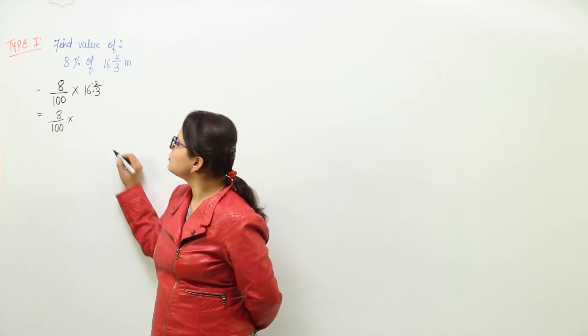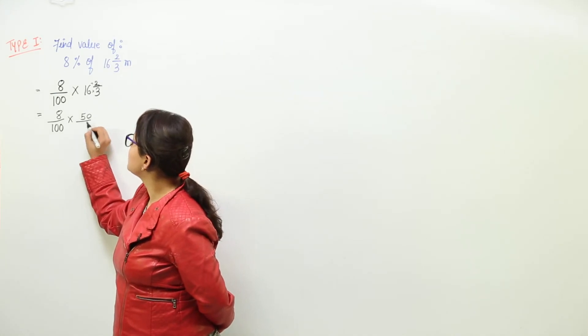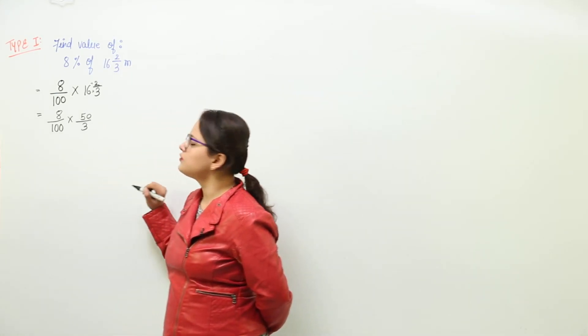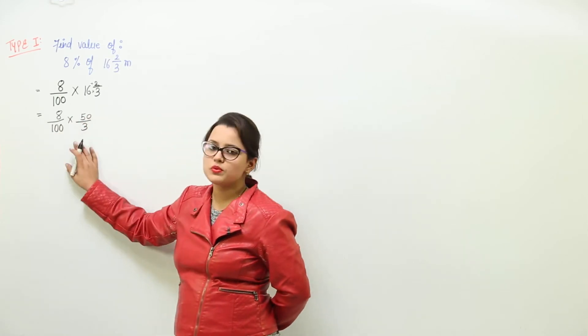So what is 16 into 3? That is 48, and 48 plus 2 will be 50. So we get 50 over 3. Now here we just have got the 2 fractions to be multiplied.